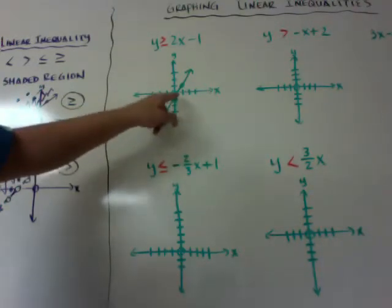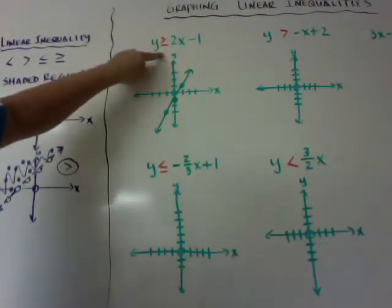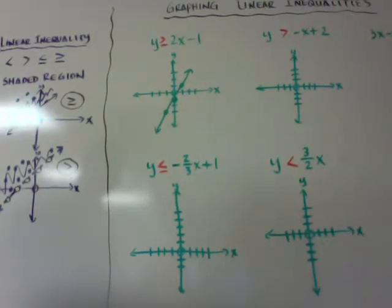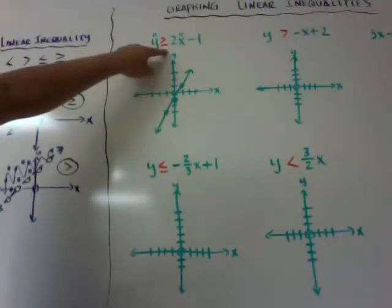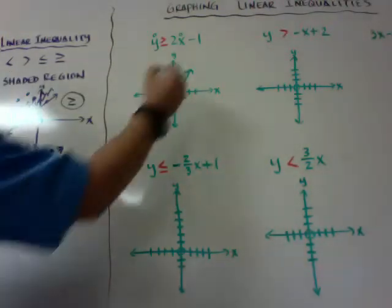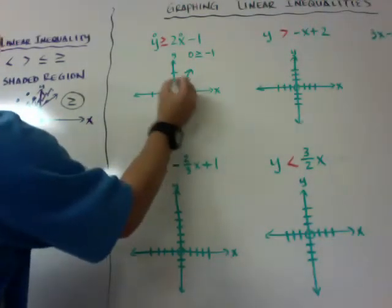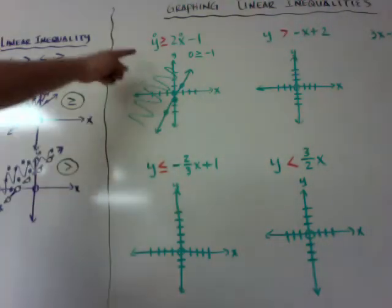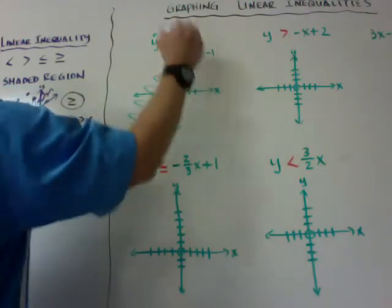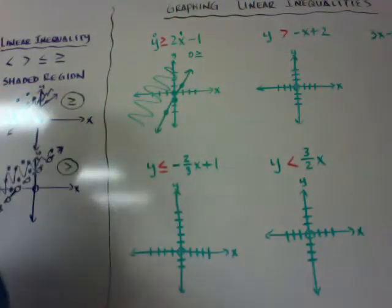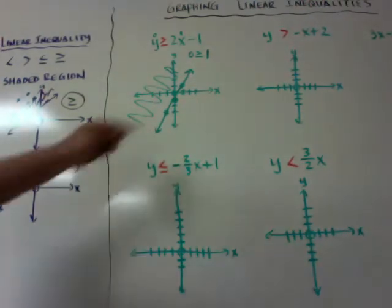Or I could use an easy number like (1, 0). You don't want to use a big ugly number like (−8, 7) because then you've got to plug it in. If you can use (0, 0), that's probably easiest. I can see it doesn't hit there. So putting (0, 0) in: 0 is greater than or equal to 0 minus 1, which is 0 ≥ −1. That is true, so shade on the side with (0, 0). If I used (1, 0): 0 ≥ 2 − 1 = 1, which is false, so that point is on the wrong side.